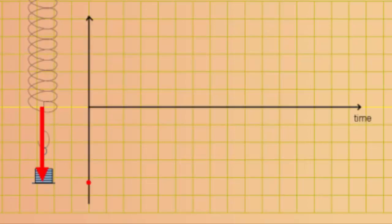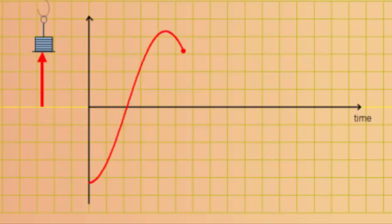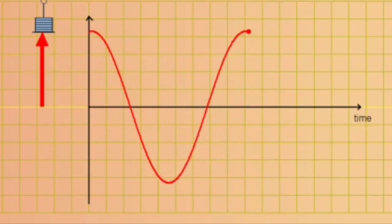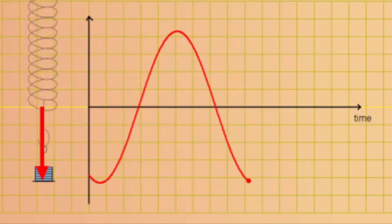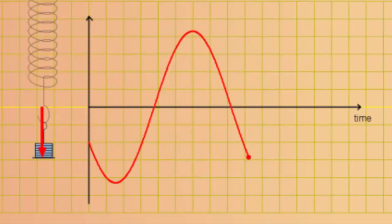Let's look at the position of the mass as it oscillates about its equilibrium position in this displacement time graph. We can trace out the position of the mass as a function of time. The displacement of the mass is its position relative to the equilibrium, which is set to zero along the y axis.